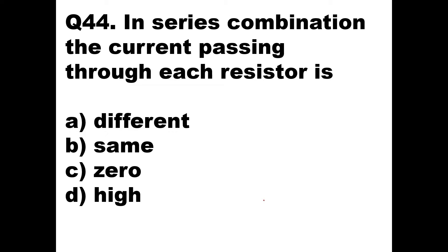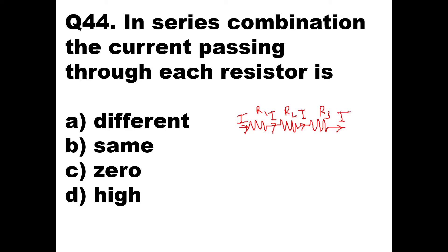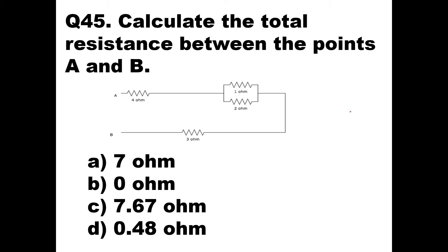Question 44: In series combination, the current passing through each resistor is what — different, same, zero, or high? In a series combination with R1, R2, R3, when a current I passes through, that same current passes through each resistor. So the current is the same in series combination. Option B — same — is correct.